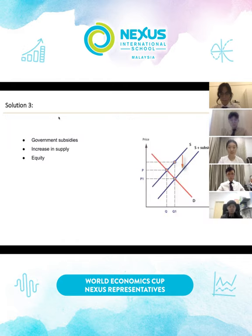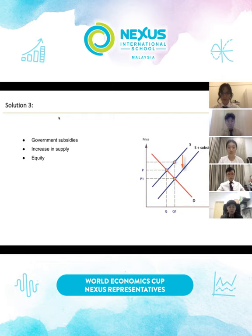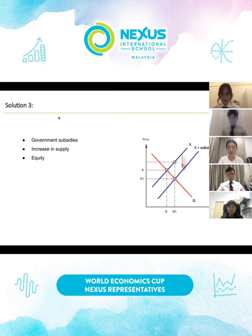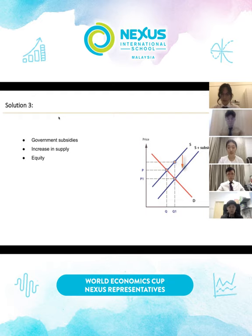Lastly, the government should provide subsidies to industries, giving financial support to domestic industries. An example of this would be providing subsidies for education. Since education is a merit good, this will create positive externalities. In the long run, the people are more educated and this may lead to developments in technology and increasing efficiency and output.